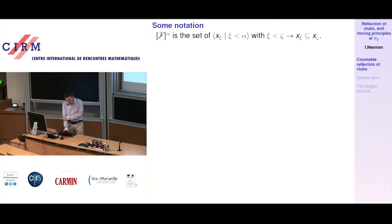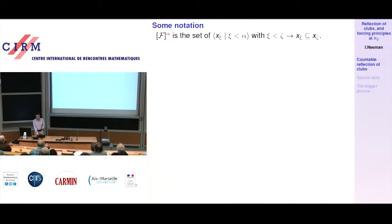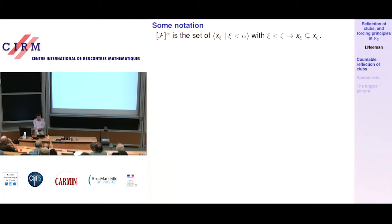So I just mean the set of all sequences of length alpha, so that if xi is less than zeta, then x_xi is a subset of x_zeta — just increasing in inclusion. And the x_xi are members of script F.